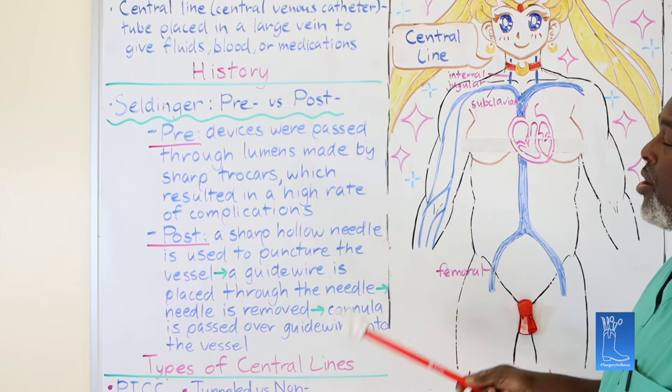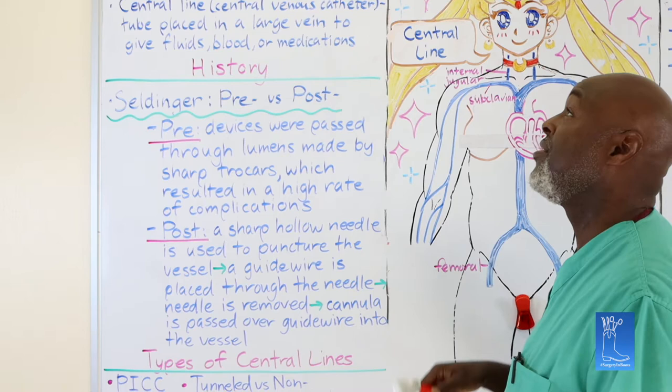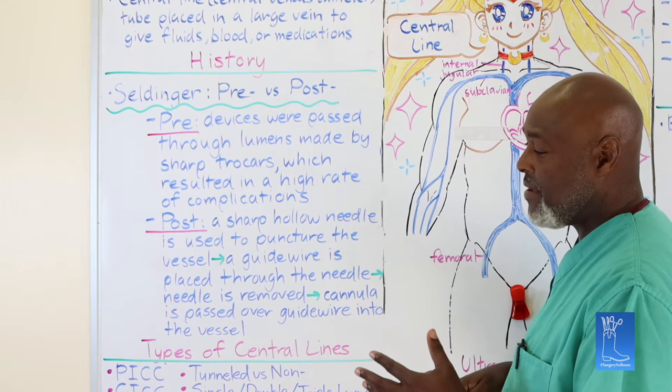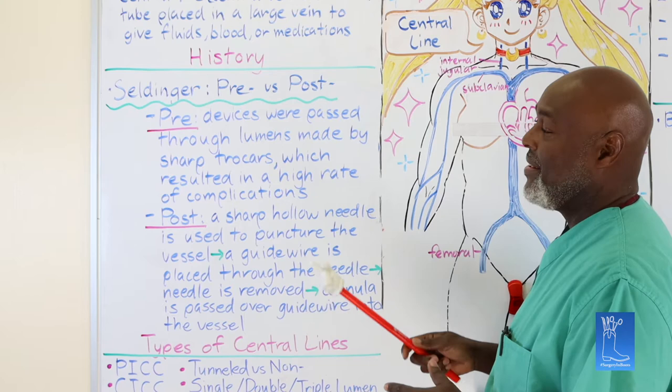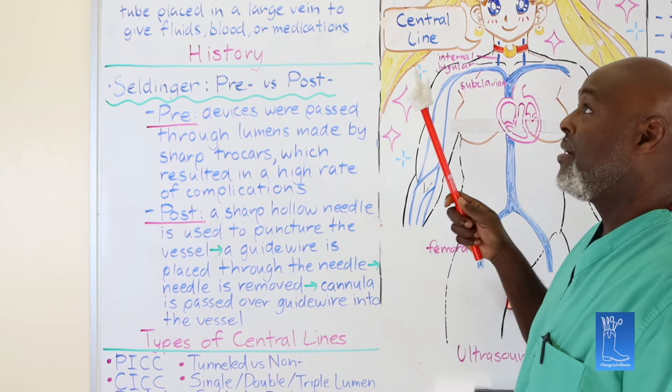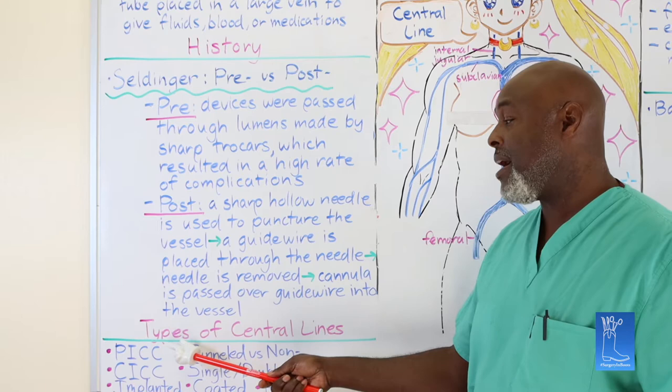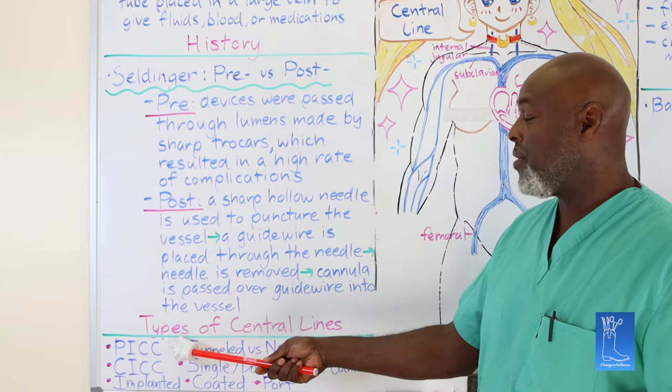As far as central lines go, there are Hickmans, PICC lines, permacaths, VAS caths, large IVs, double lumens, cortis, and PA catheters. They all share in common the Seldinger technique and are placed in a vein. Arterial lines are a little different, so we're really talking about venous lines. A PICC line is peripherally inserted.